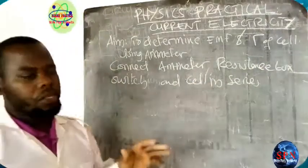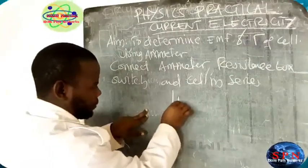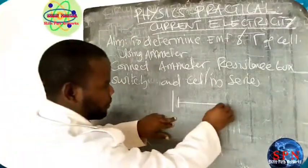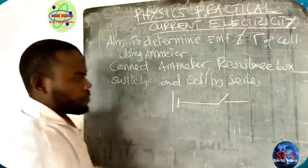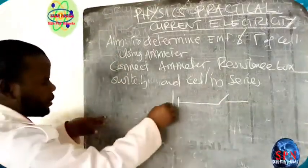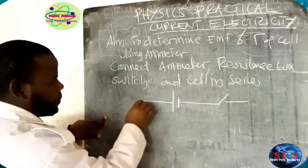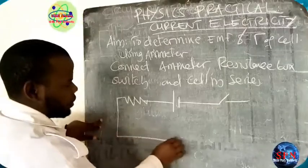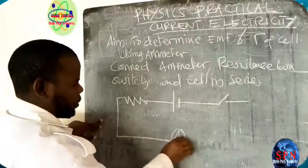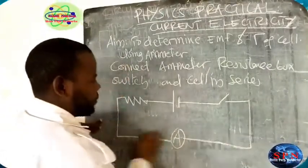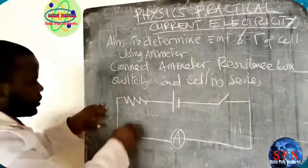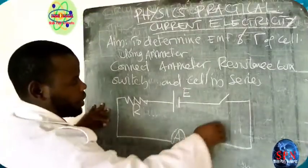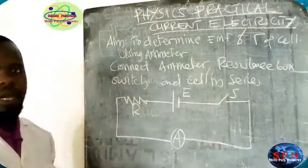Your circuit should be in series. You are going to connect the cell, then the switch, then a resistance box, and then a current meter. In this circuit: this is the resistance box, this is the EMF source which is the cell, this is the ammeter, and this is the switch. That is our circuit.